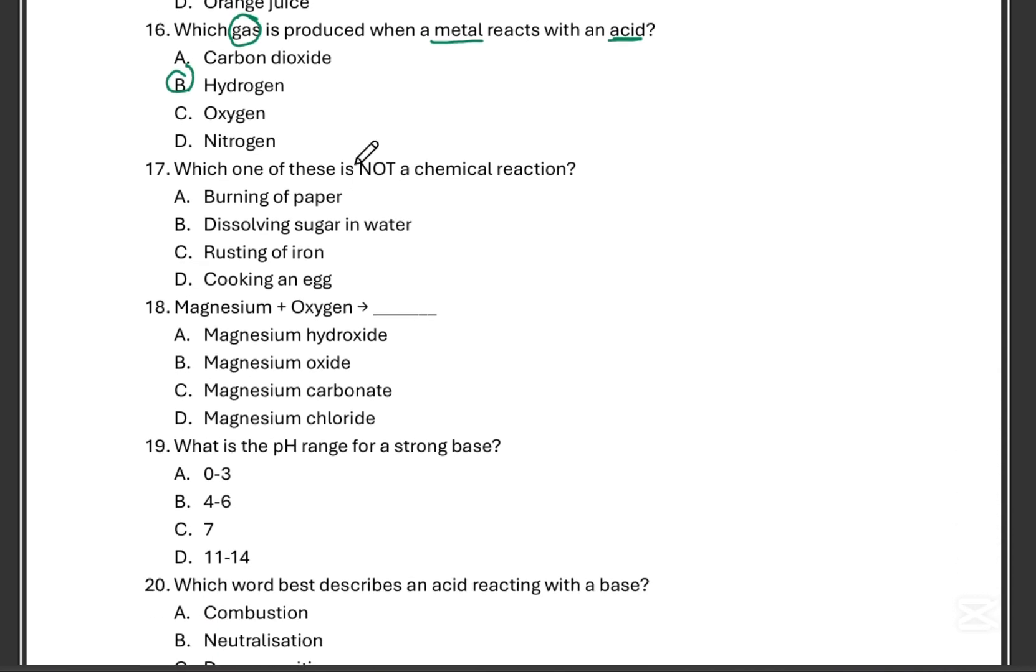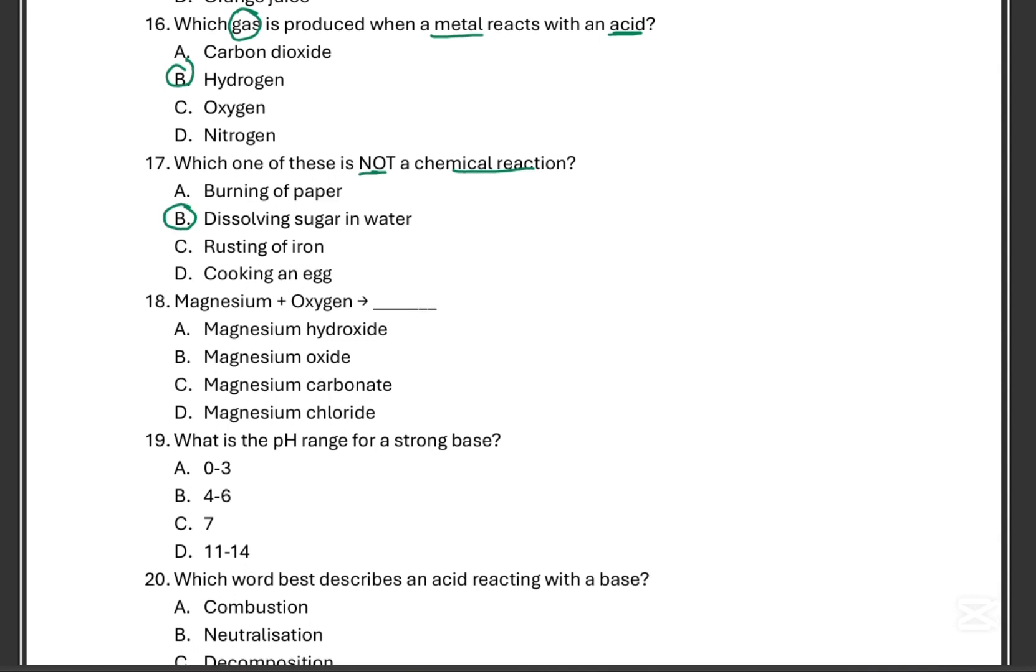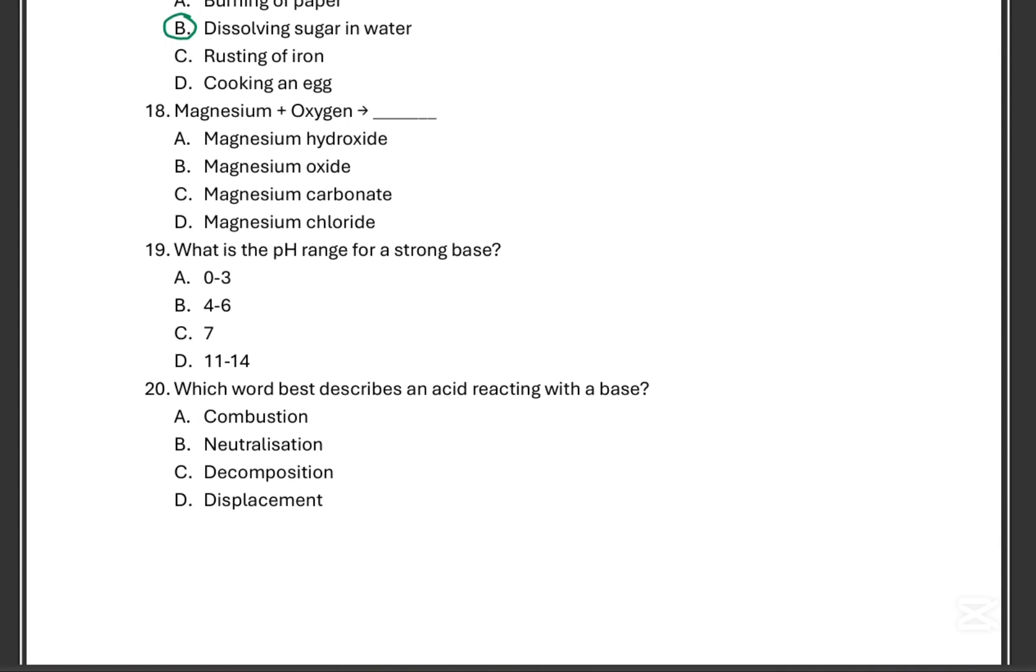Which of the following is not a chemical reaction? 17, that is B. Not a chemical reaction, dissolving sugar in water. That's not a chemical reaction. Everything else, I guess it is. We're almost done, let's hang in there.